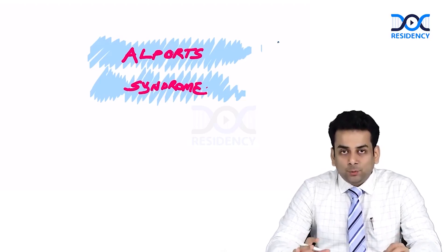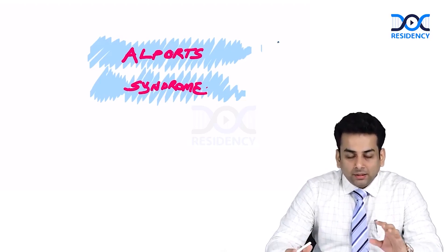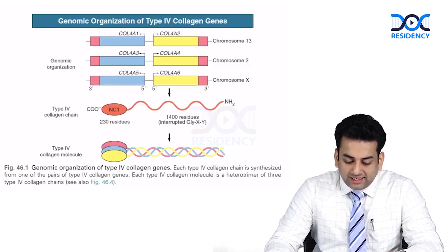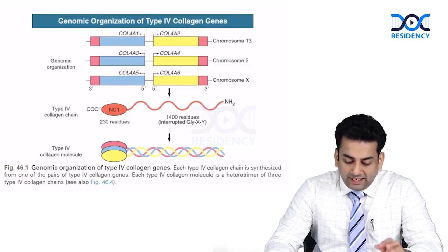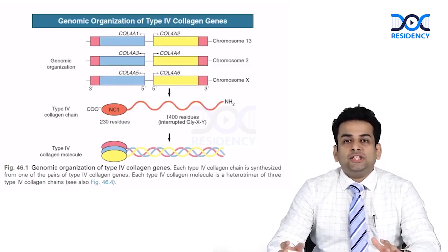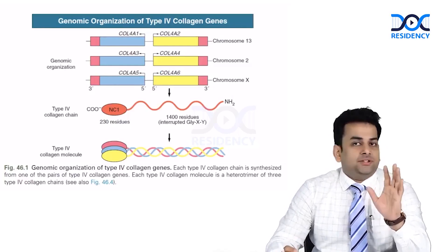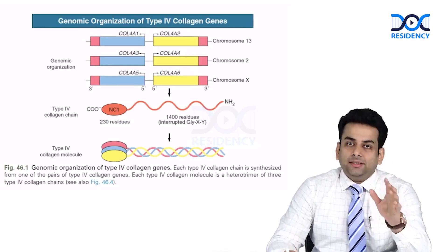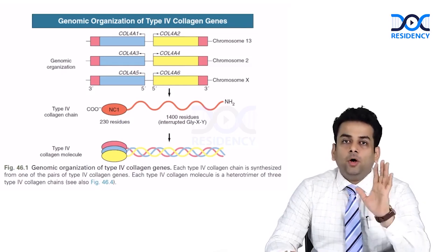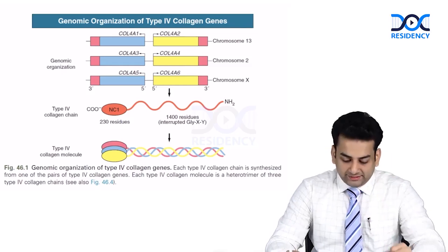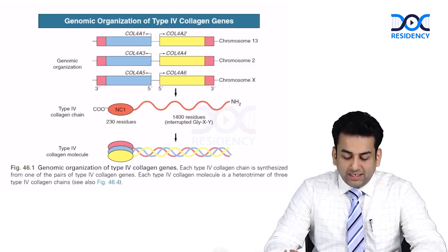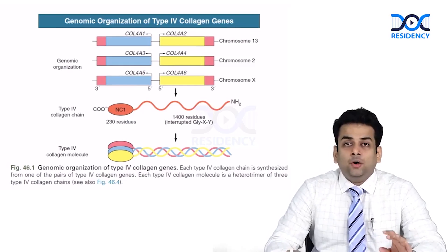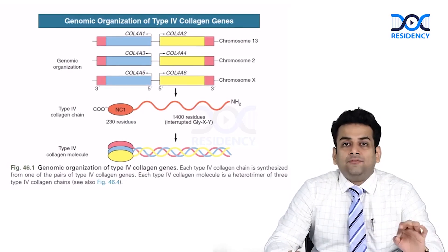So let's discuss Alport syndrome in a bit more depth. We know that Alport syndrome is due to mutation of the alpha chain of collagen IV — it may be the alpha 5 chain for X-linked, or the alpha 3 and alpha 4 chains for autosomal varieties. First, let us understand the organization of the collagen IV alpha chains.